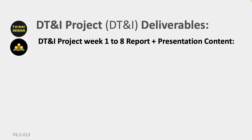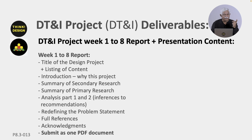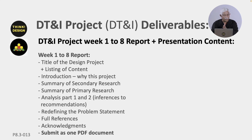The week one to eight report needs to include: title of the design project, listing of the content, introduction explaining why this particular project, summary of the secondary research, summary of the primary research, analysis part one and part two — which includes inferences to recommendations — and then redefining the problem statement. At this point you need to include full references and acknowledgement. The report can have from eight to twelve pages, submitted as one PDF document.